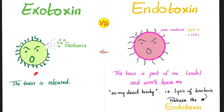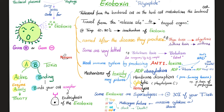Diphtheria toxin is an exotoxin — the toxin is released from the bacterial cell once the bacteria invades your body. The bacteria can invade your nasopharynx or your skin, causing respiratory diphtheria or cutaneous diphtheria respectively, which is why the site of infection makes a difference. The exotoxin is a classic AB toxin: A is active with catalytic enzyme activity; B is for binding, facilitating entry of the A subunit into your cell.